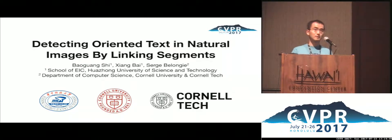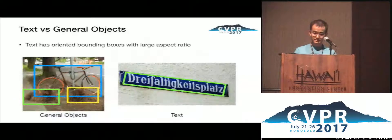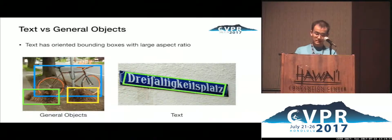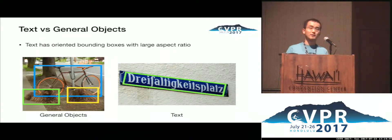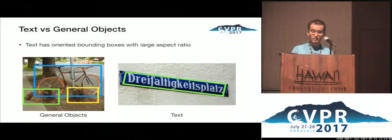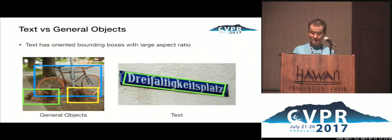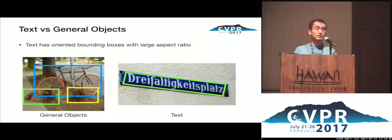The paper is about text detection. So why do we need a text-specific detection algorithm? General object detectors such as Faster RCNN or SSD perform remarkably well, both in terms of accuracy and speed. But text is often special.